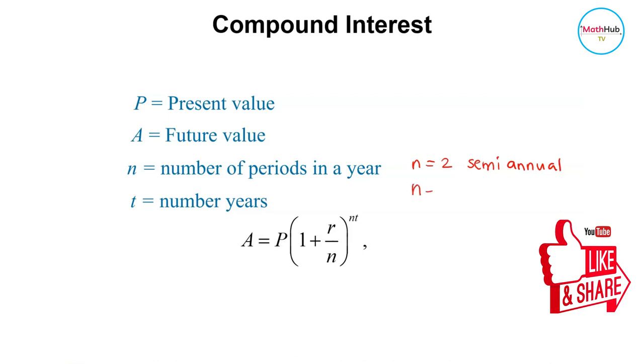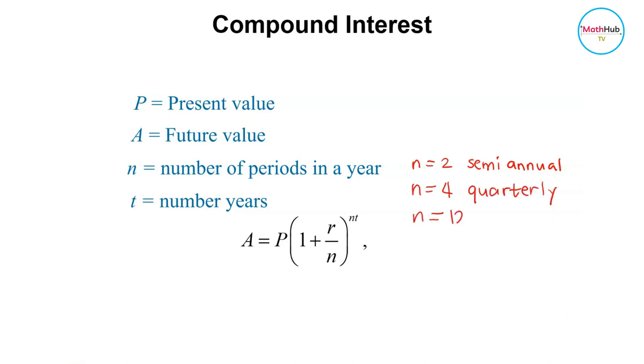N is equal to 4 if you have quarterly. And you have N is equal to 12 if you have monthly. N will be equal to 365 if it is daily.